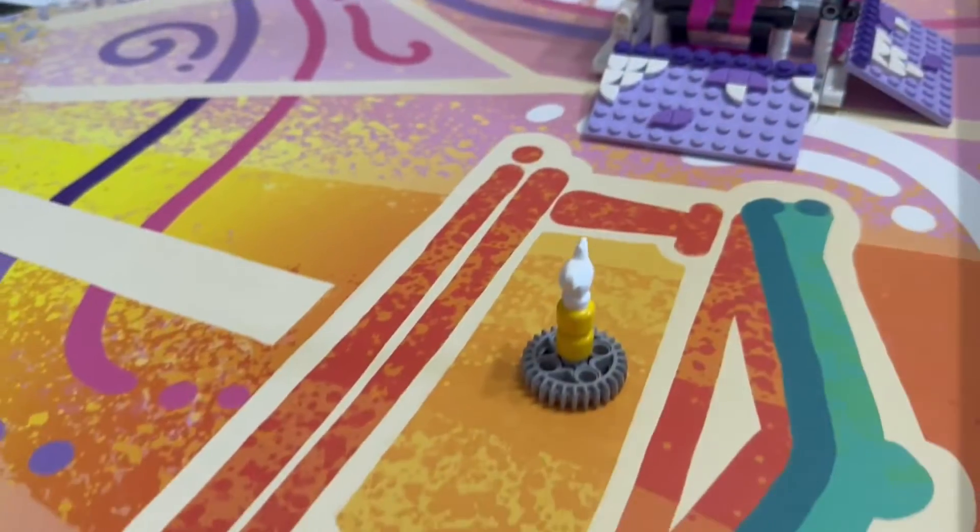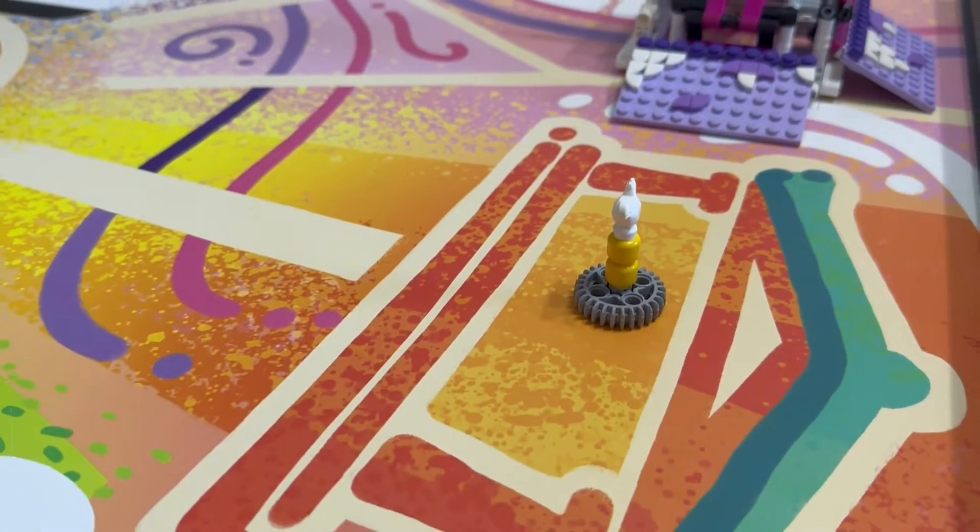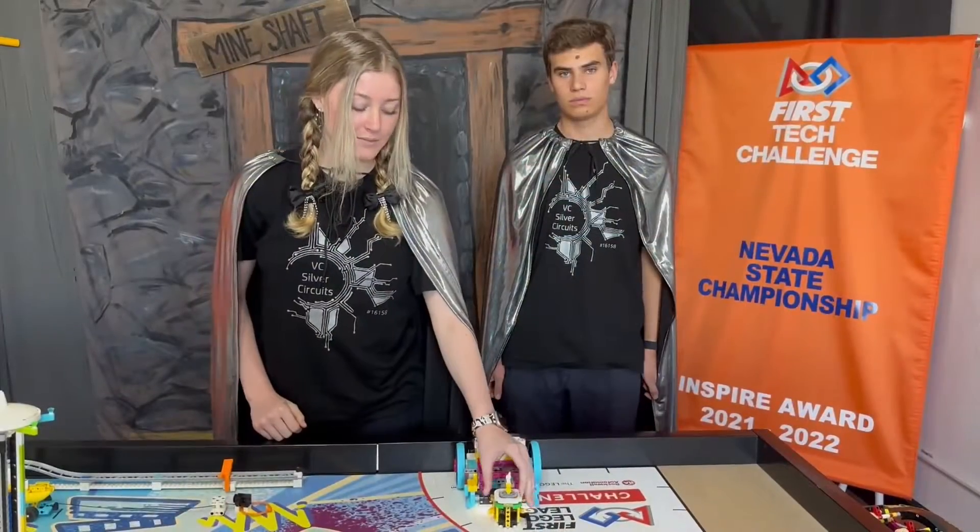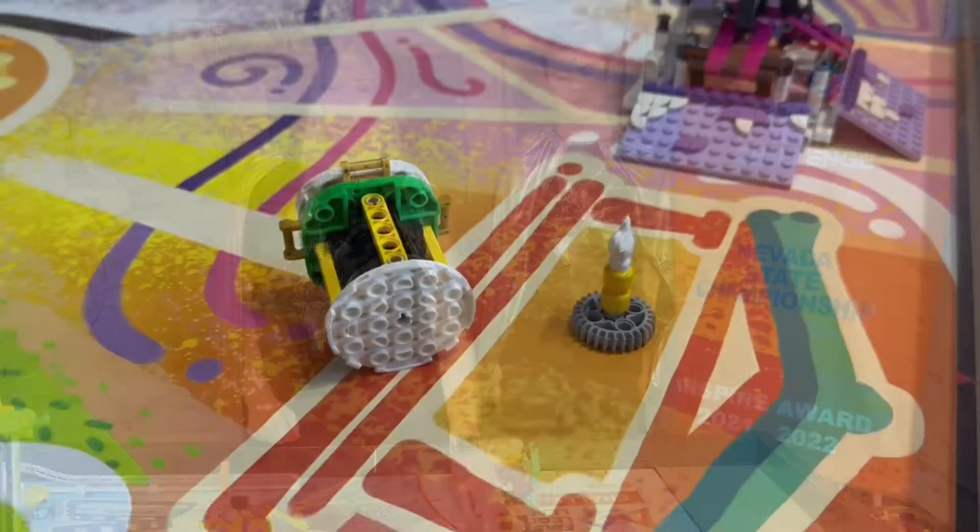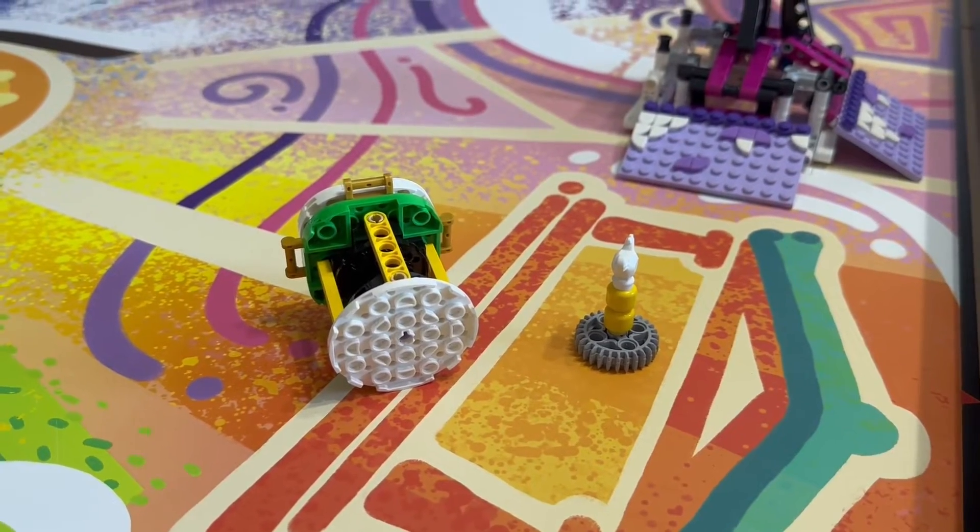If you only get your LEGO Masterpiece in the museum target area, that's only 10 points. And if you get both in the museum target area, but they're not upright, that's also only 10 points. So we're going to show you how we did it.